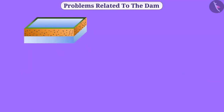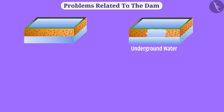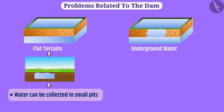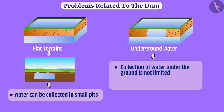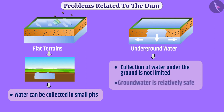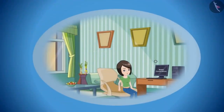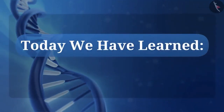By giving control of these local water structures to local people, proper management will be done and over-exploitation can be reduced. Underground water storage has many benefits compared to water storage on flat terrains — it spreads to surrounding areas and can be stored for a long time. Problems like water pollution and mosquito breeding can happen in small surface pits, while underground water is relatively safe. Today we have learned about water conservation.